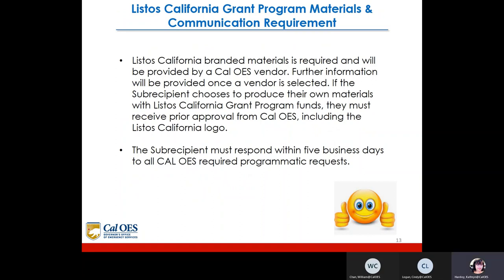If the subrecipient chooses to use Listos California grant program materials, materials and communications will be provided by the Cal OES vendor. Further information will be provided once a vendor is selected. If the subrecipient chooses to produce their own materials with Listos California grant program funds, they must receive prior approval from Cal OES, including the Listos California logo. The subrecipient must respond within five business days to all Cal OES required programmatic requests.